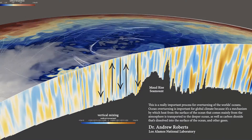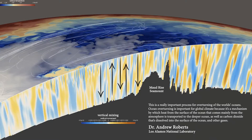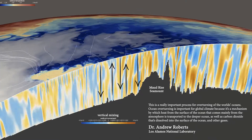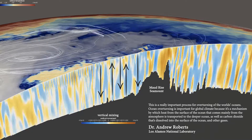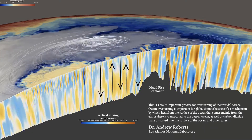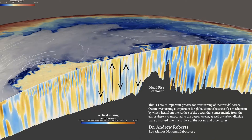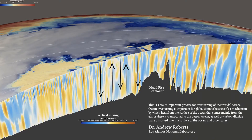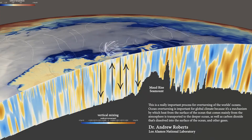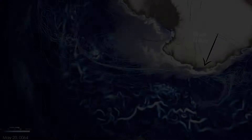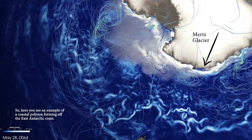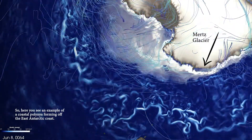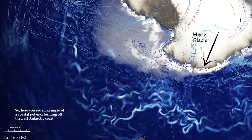Ocean overturning is important for global climate because it's a mechanism by which heat from the surface of the ocean, that comes mainly from the atmosphere, is transported to the deeper ocean, as well as carbon dioxide that's dissolved into the surface of the ocean and other gases. Here you see an example of a coastal polinia forming off the East Antarctic coast.